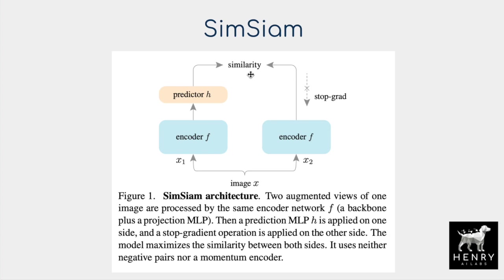The key component — and experiments show this is really the core of making these Siamese representation learning algorithms work — is the stop gradient when applying the loss function back to the encoder f(x2). The weights of f(x2) don't update with any gradient with respect to how it's encoding f(x2); only f(x1) and the projection H(f(x1)) update.